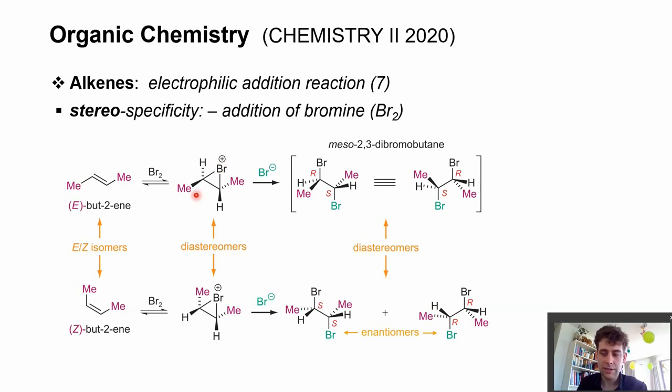The bromide anion opens this three-membered ring and then forms the respective products here.